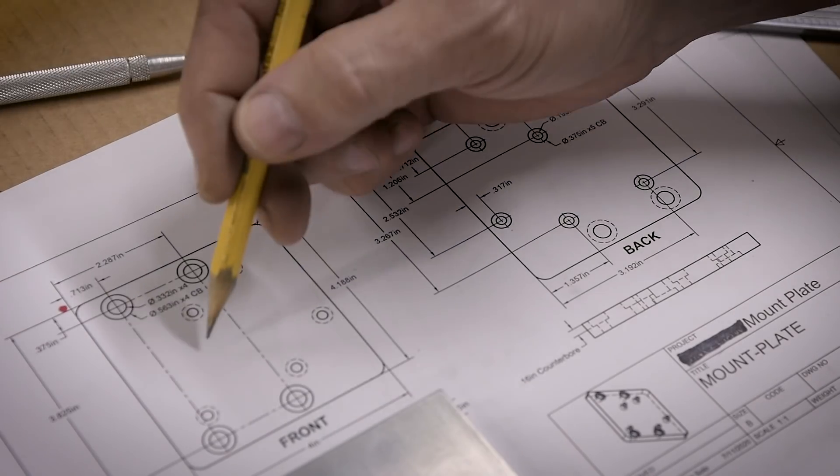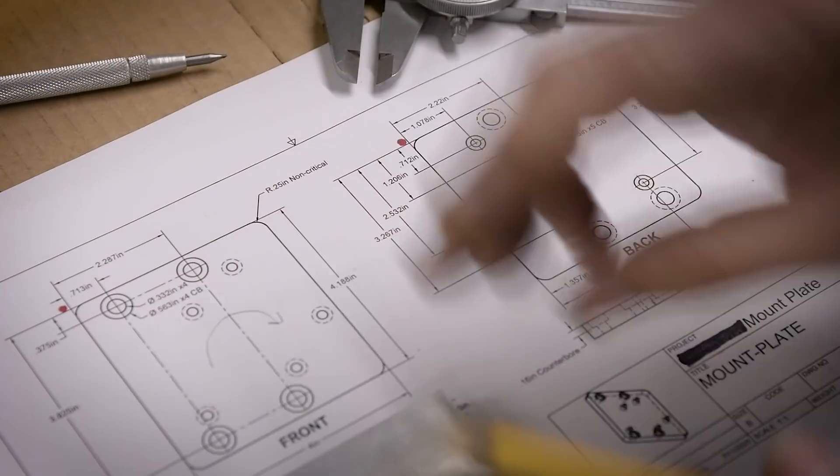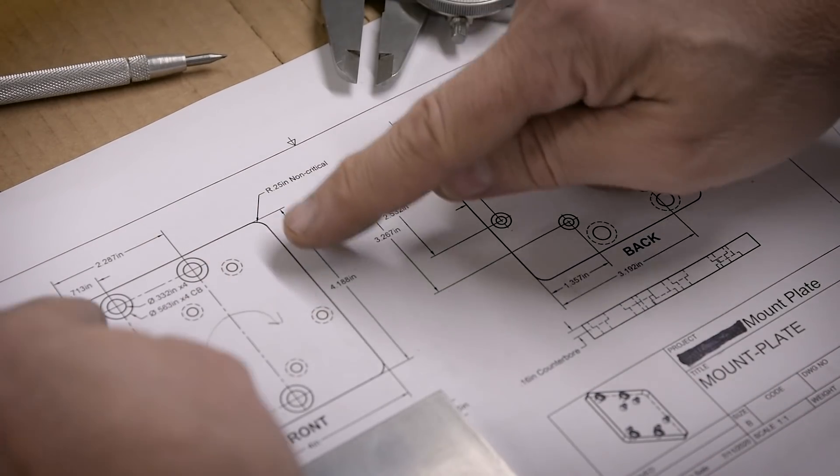And also, there's a couple of extra challenges in here for me. I've got to flip the part over and I also have to rotate it 90 degrees because if I don't, my drills could actually hit the vice jaws.